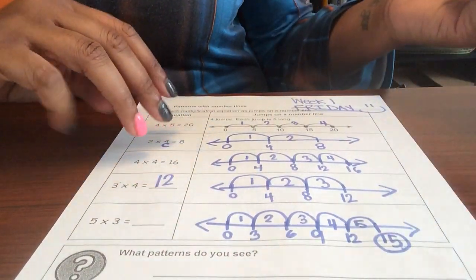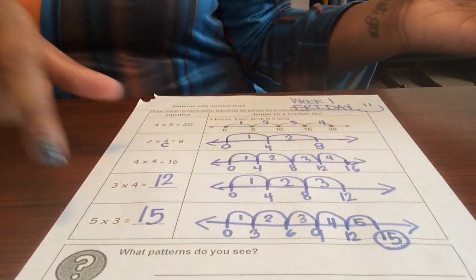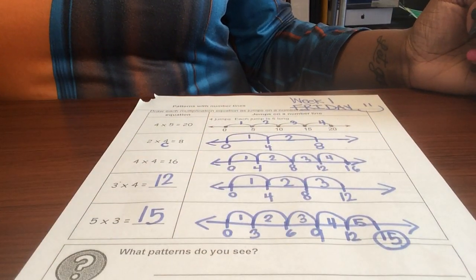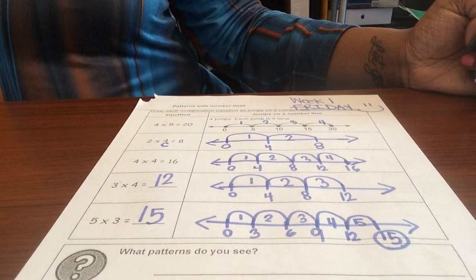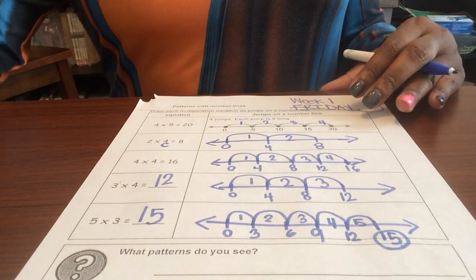So three times five gives us fifteen. All right, I'm skipping the part about the patterns because you guys are gonna be trying to find some patterns. I just helped you solve it.